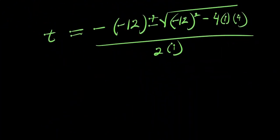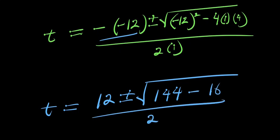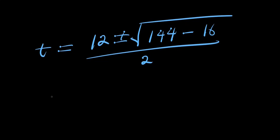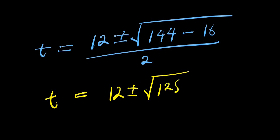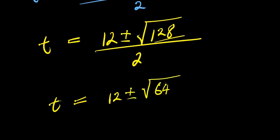Substituting in: t equals negative times negative 12, plus or minus square root of negative 12 squared minus 4 times 1 times 4, divided by 2. This gives t equals 12 plus or minus square root of 144 minus 16, divided by 2, which is 12 plus or minus square root of 128, divided by 2.